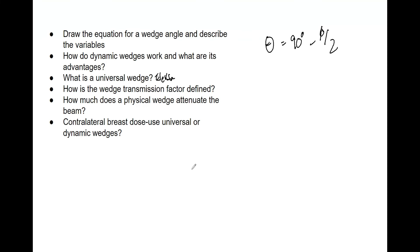Universal wedges provide about 1.5 percent more dose due to scatter relative to the central axis compared to dynamic wedges. That is a good brief overview of wedges and how they are used.